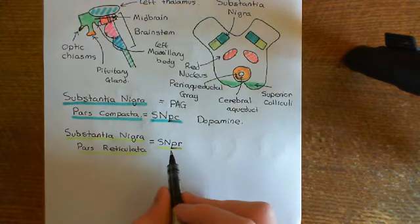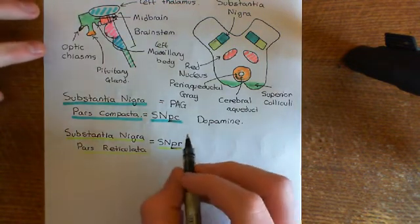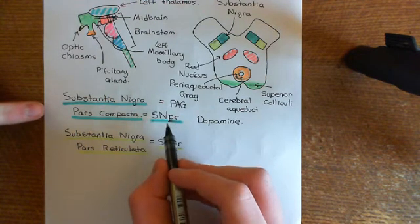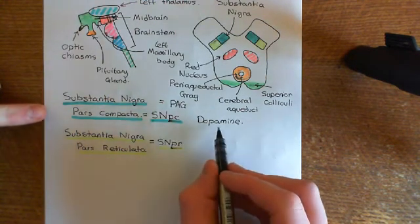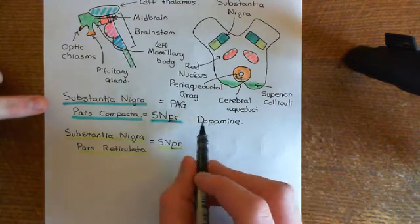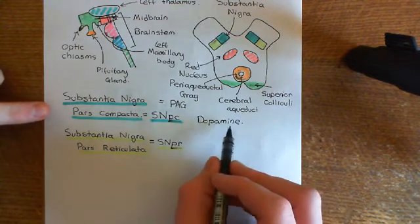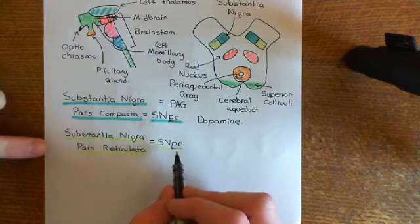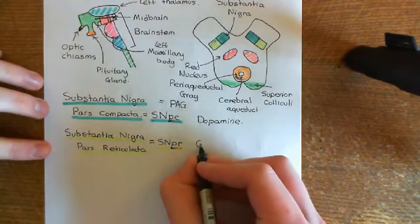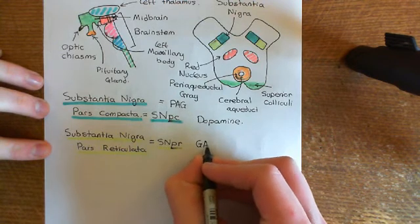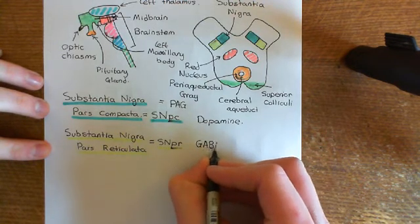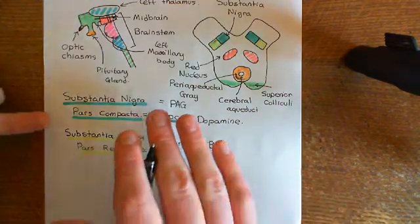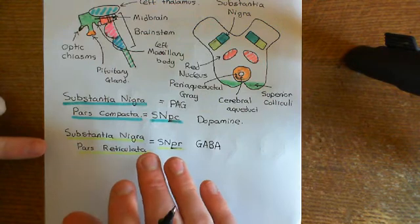This area is going to have an extremely different function to the substantia nigra pars compacta. The substantia nigra pars compacta releases dopamine — the neurons of the pars compacta use dopamine as their neurotransmitter. The neurons of the substantia nigra pars reticulata are going to use the inhibitory neurotransmitter GABA — gamma amino butyric acid — as their neurotransmitter. We will come back to the functions of these two areas later on.